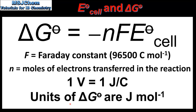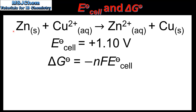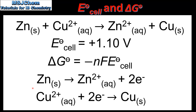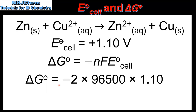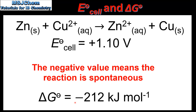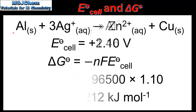In our first example we'll calculate the Gibbs free energy change for this reaction. The cell potential for the reaction is positive 1.10 volts. To determine the value of N we need to look at the two half equations. In this reaction the number of moles of electrons transferred is 2. We then input the values into the equation, where N is 2, the Faraday constant is 96500, and the E cell is 1.10, which when divided by 1000 and given to 3 significant figures is negative 212 kilojoules per mole.